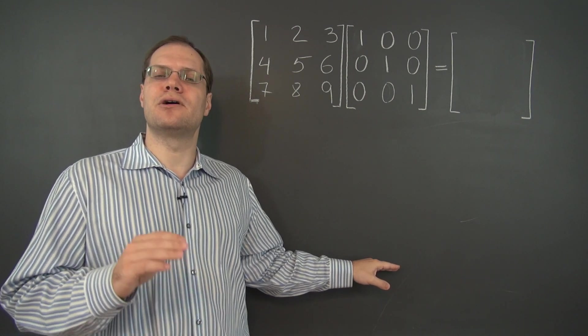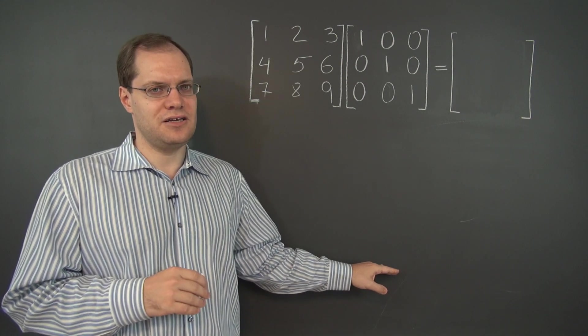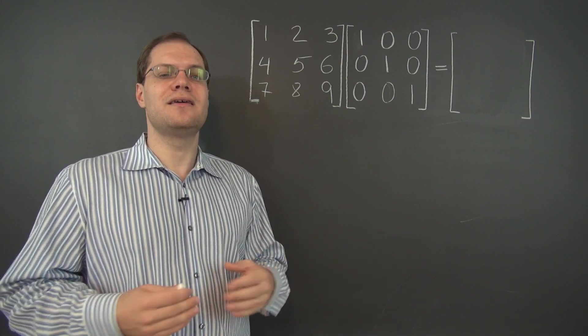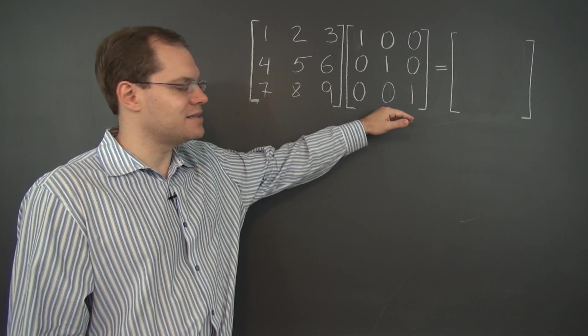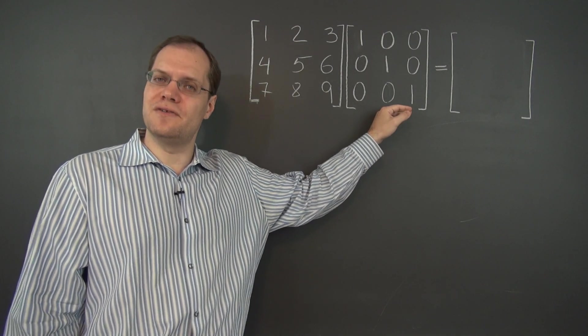It is analogous to the number one in ordinary multiplication. Multiplying any number by the number one leaves that number unchanged. Five times one equals five. This is the matrix equivalent.